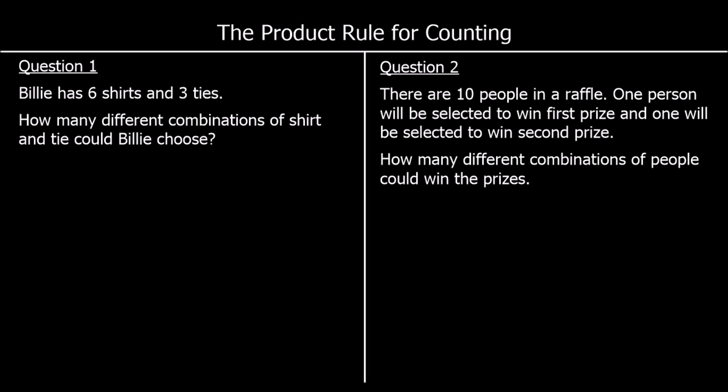To finish up, two questions — pause the video, give them a go, and press play when you're ready for the answers. Question one: Billy has six shirts and three ties; how many different combinations of shirt and tie could Billy choose? There are six shirts, and for each shirt there are three ties to go with it, so six times three is 18 different combinations.